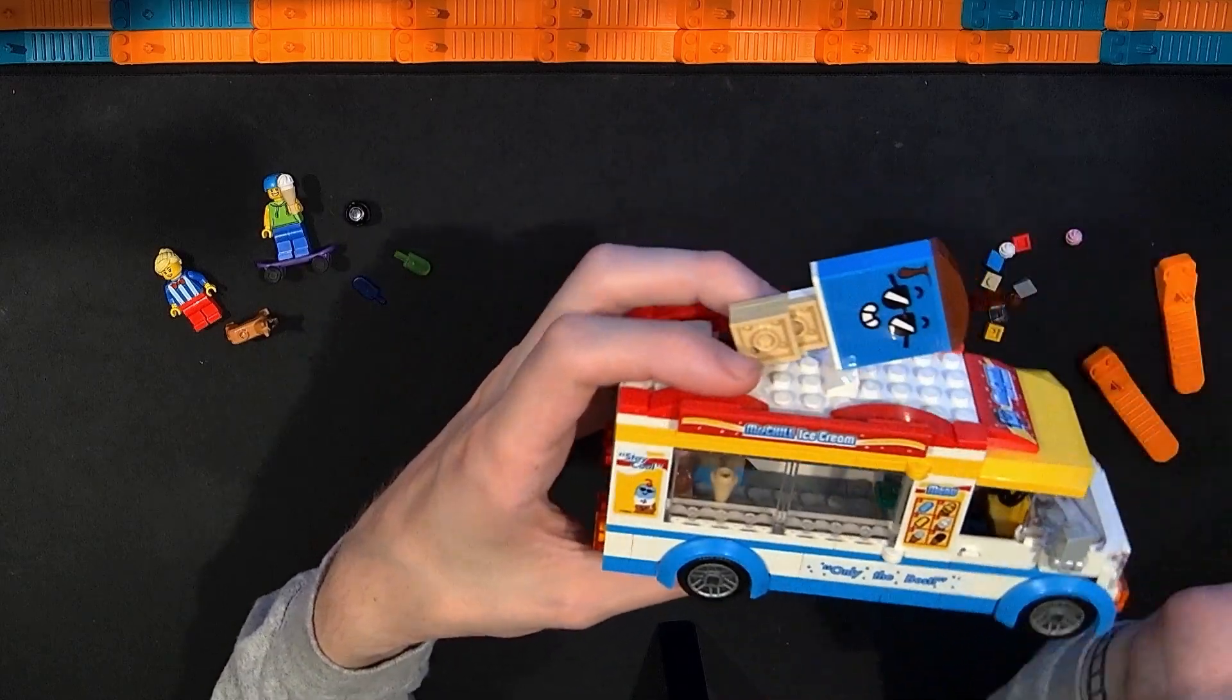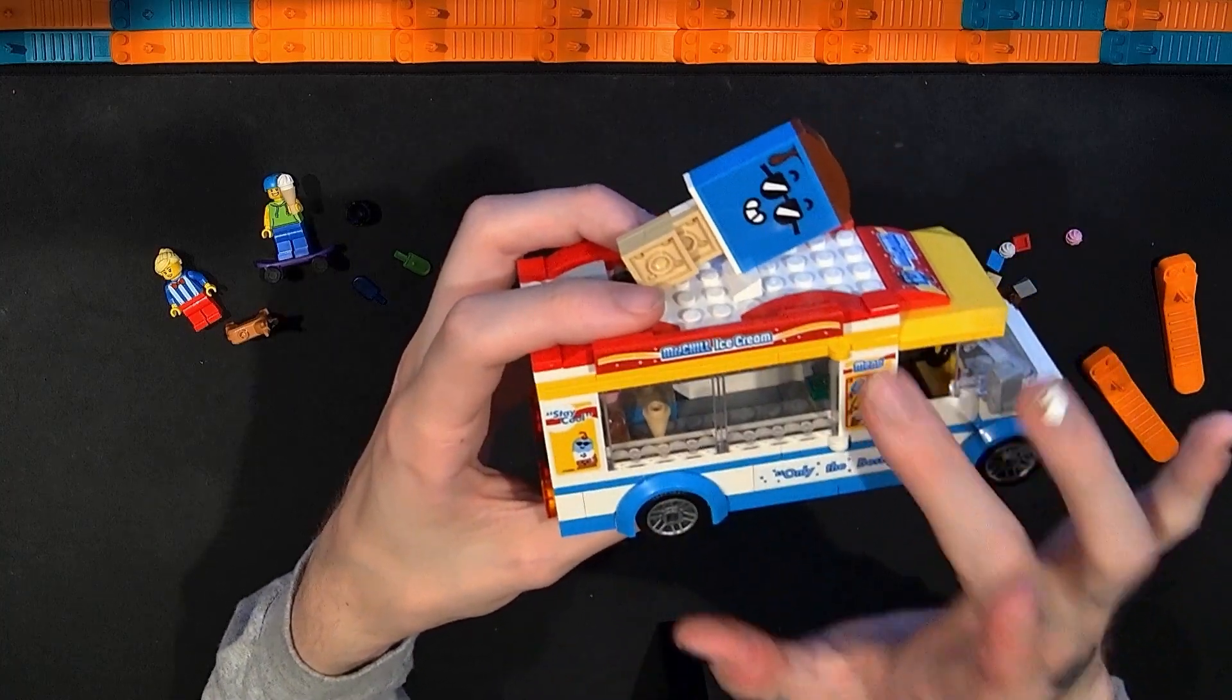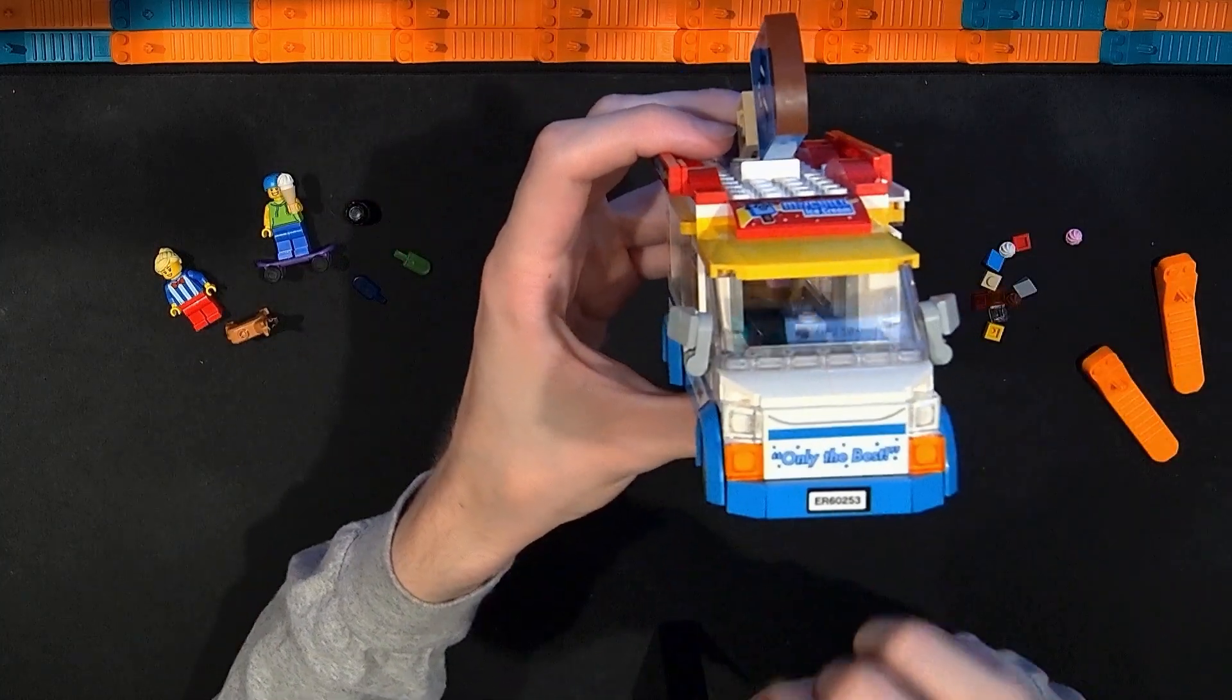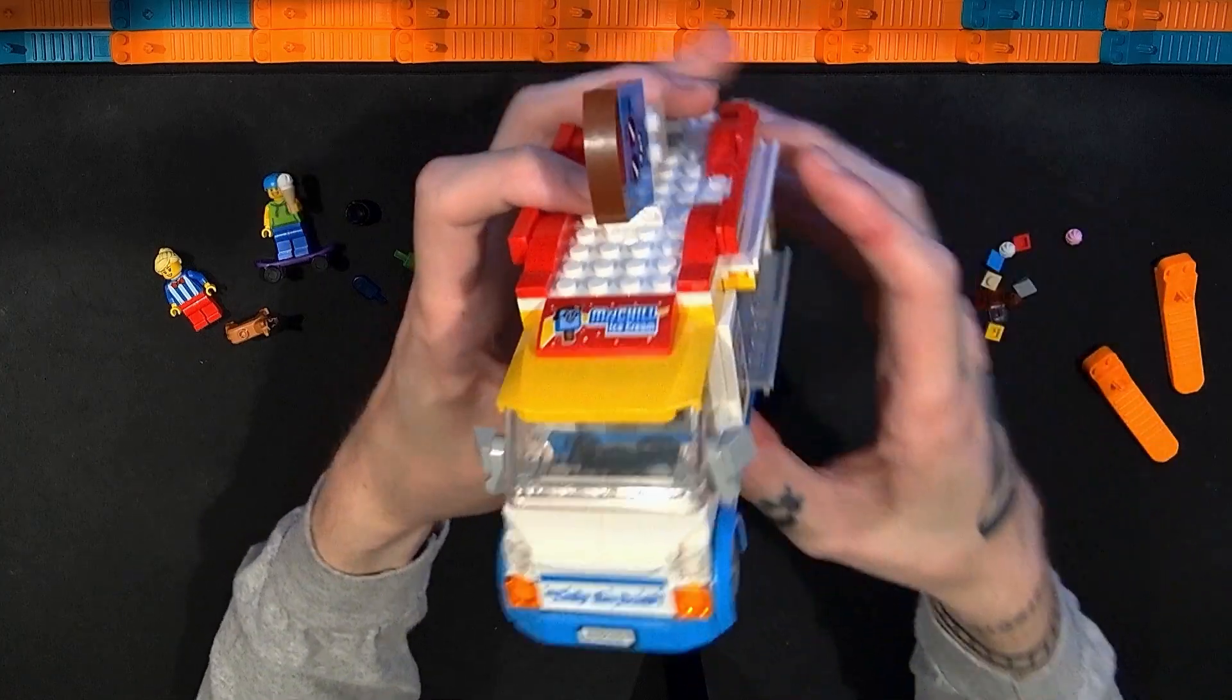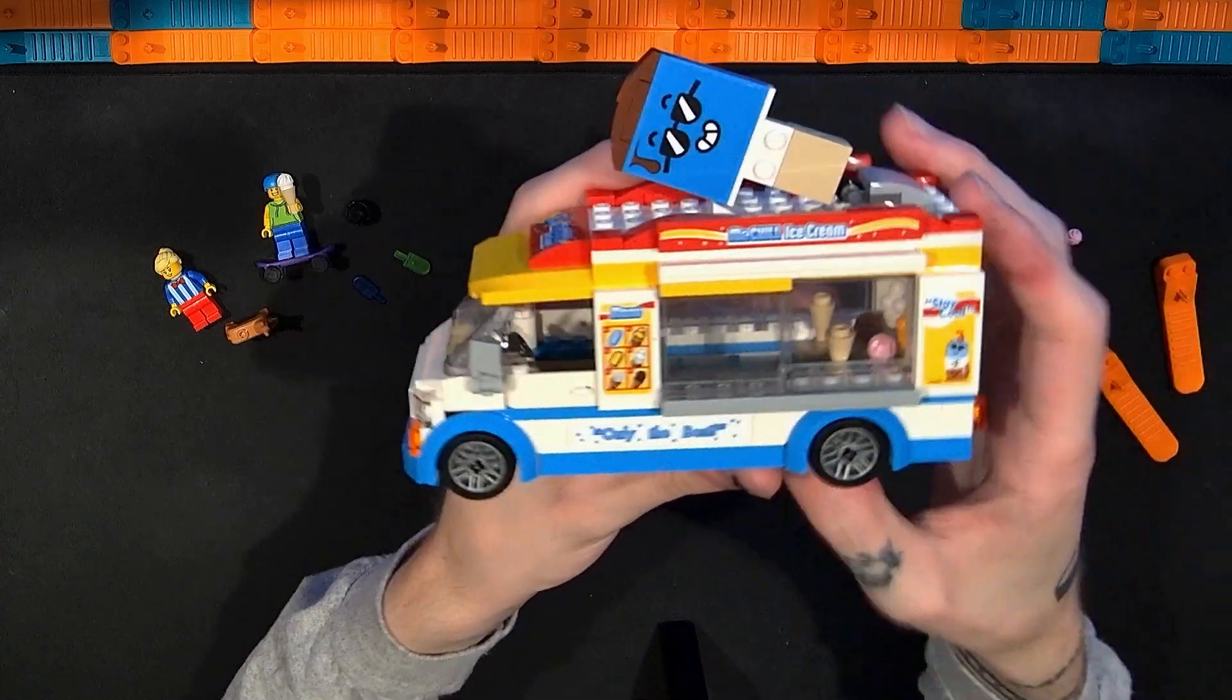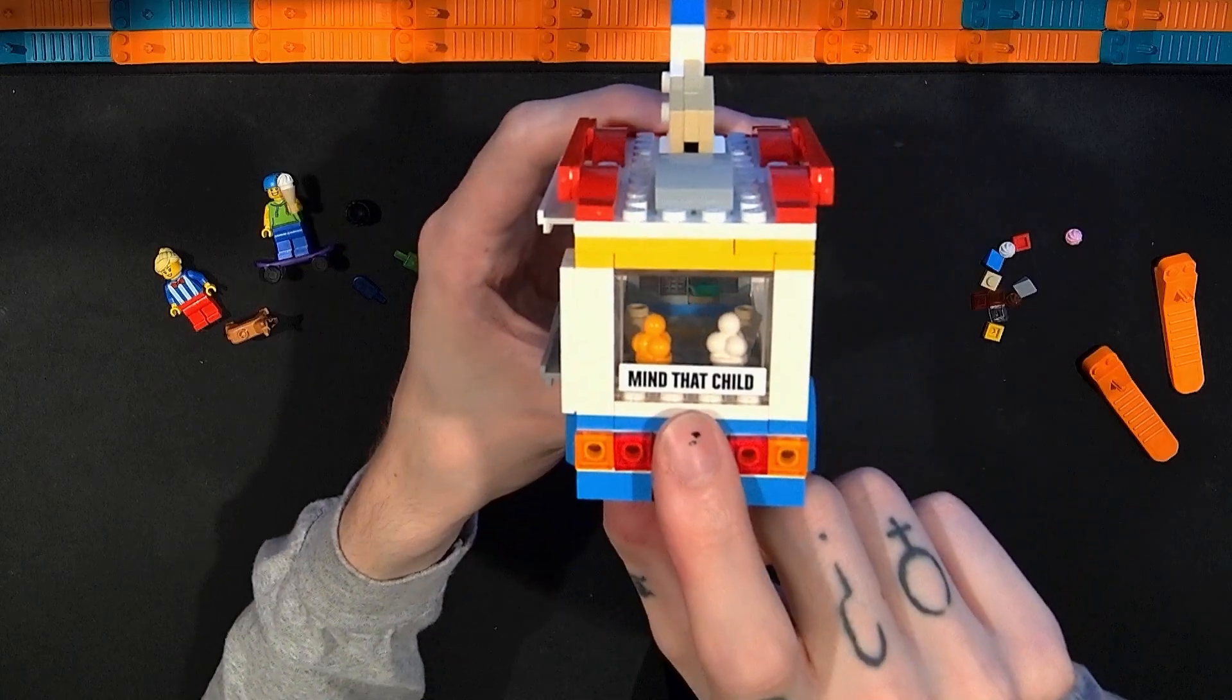So up on the side this is a sticker, Mr. Chill Ice Cream, this banner piece on that tile is a sticker. A sticker here and a menu sticker here. Only the best, that is a sticker. Moving around to the front a sticker for the license plate. Sticker for the only the best and same for the Mr. Chill up there. Flipping over to the other side. Very similar. We got this one. We got the menu. Only the best. The banner and the same face sticker on the signage.